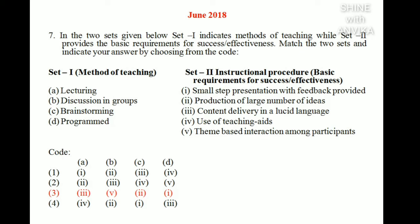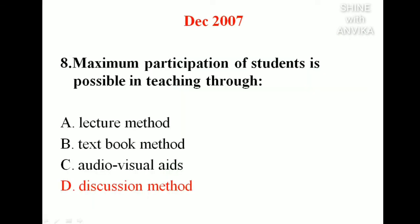For brainstorming, students produce a large number of ideas — for example, given the prompt 'if I were an education minister,' every student thinks as if they are the education minister and generates many ideas — so the correct match is 'production of large number of ideas.' For programmed instruction, individual student ability is continuously monitored and improved through recorded responses, so the correct match is 'small step presentation with feedback provided.' The correct code is 3-5-2-1.